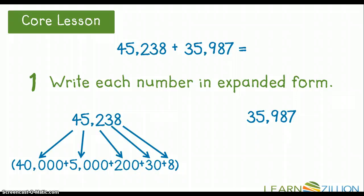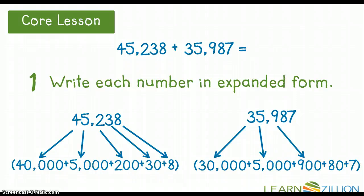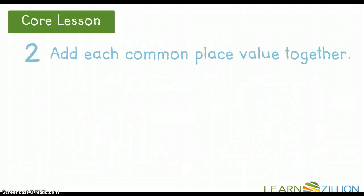Well, now we need to do that for the number 35,987. So the 3 is in the ten thousands place, and so I would write that as 30,000. The 5 is in the thousands place and has a value of 5,000. The 9 is in the hundreds place and has a value of 900. The 8 is in the tens place and has a value of 80. And the 7 is in the ones place with a value of 7.